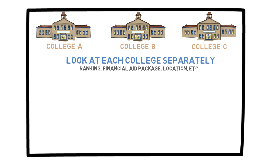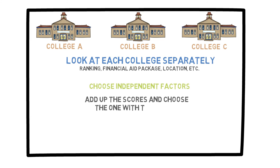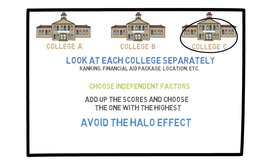Your factors may be things such as ranking, financial aid package, location, and so on. Remember to choose relatively independent factors — for example, you wouldn't have one factor be location and another be restaurants in town because the two are related. Then add up the scores and pick the college with the highest total. It is extremely important to also avoid the halo effect here. Say you visited College B and loved its campus because it was beautiful — do not let that cloud your judgment of other factors. Assign your scores honestly and independently from one another.